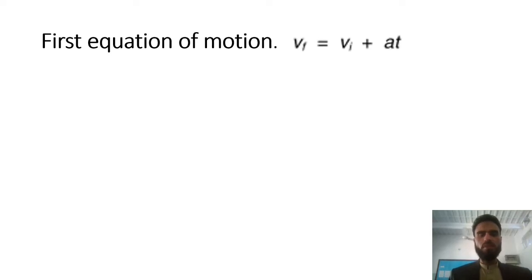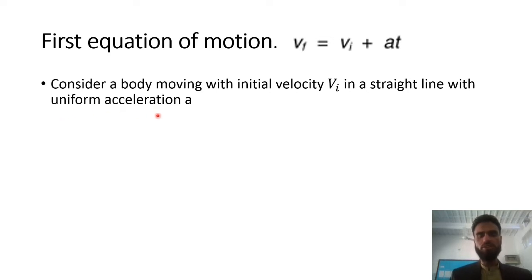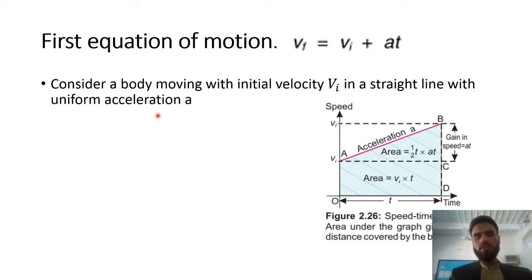The first Equation of Motion is Vf = Vi + AT. To derive this, consider a body moving with Initial Velocity Vi in a straight line (first assumption) and with Uniform Acceleration (second assumption). Since we are using the graphical method, we can plot the speed-time graph for the body. Since the acceleration is uniform, the graph will be a straight line.